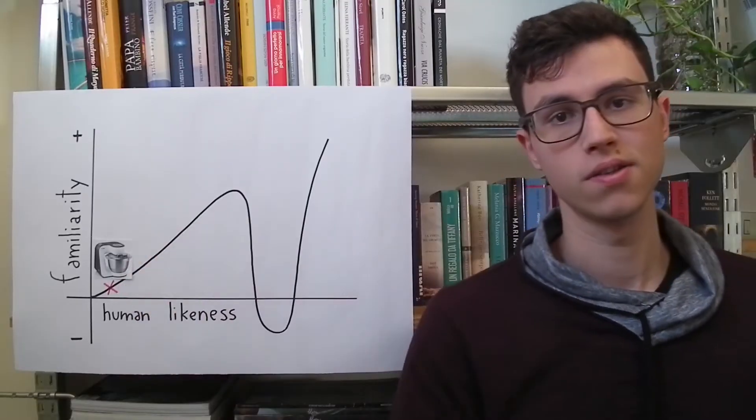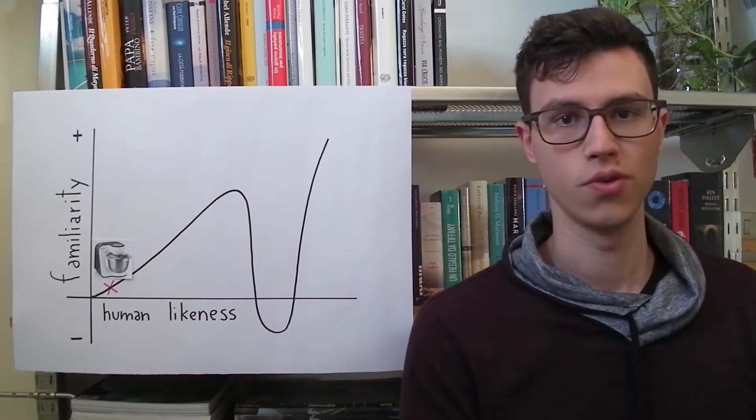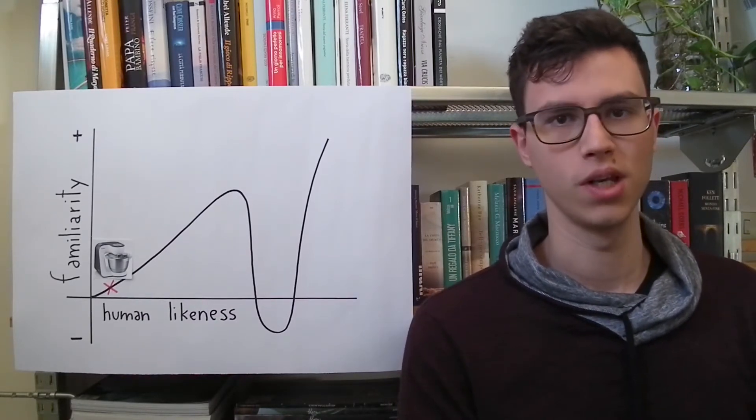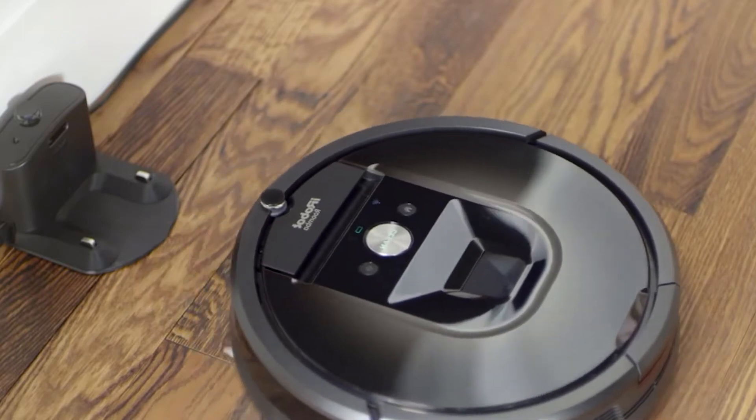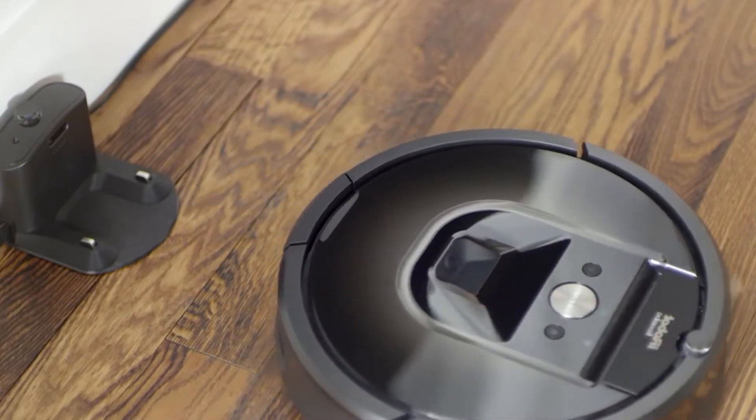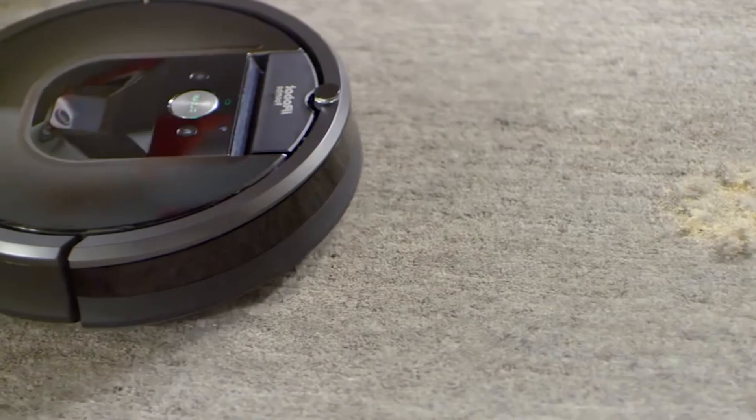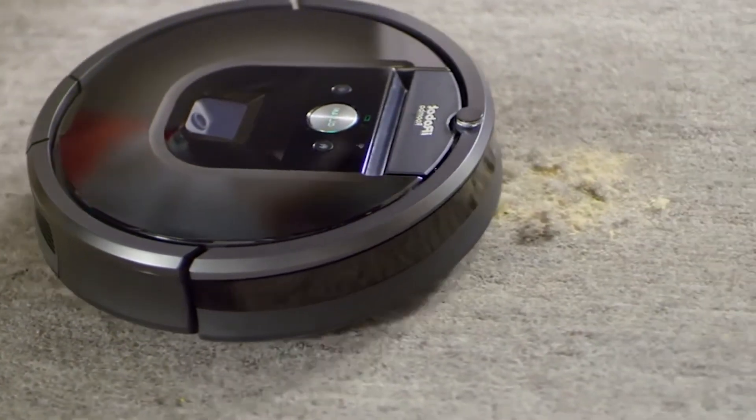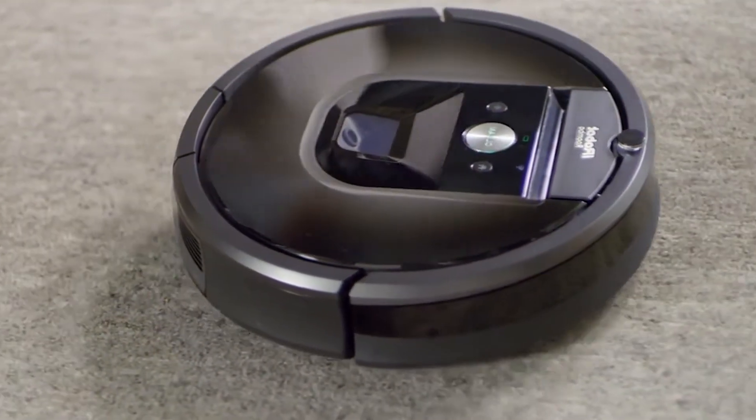Increasing the human likeness, also the familiarity for the robot increases. We can think about a vacuum cleaner robot. A vacuum cleaner robot doesn't look at all like a human, but it moves, it moves around the house, so we can think about it as a pet, and hence we have more affection for it than for a kitchen robot.